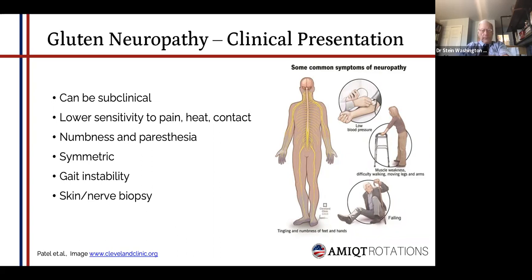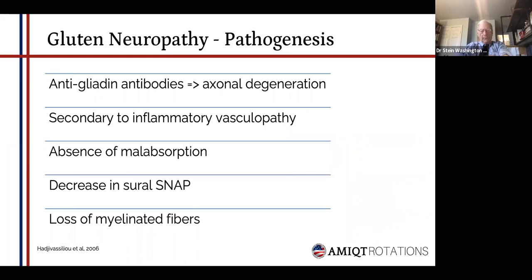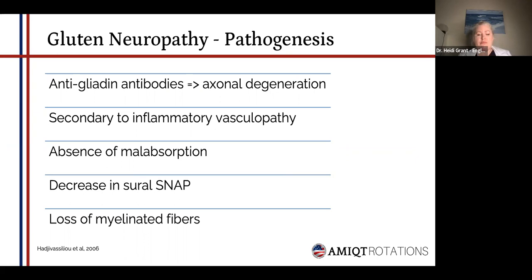The only way to definitively diagnose it would be a skin and nerve biopsy. The pathogenesis is similar — you have anti-gliadin antibodies, but as with gluten ataxia you have cross-reactivity in the deep cerebellar nuclei and Purkinje cells. In neuropathy, it's affecting axonal degeneration. And what's found is this is secondary to inflammatory vasculopathy, which also seems to be the case with ataxia.